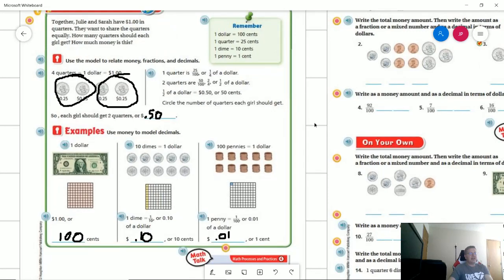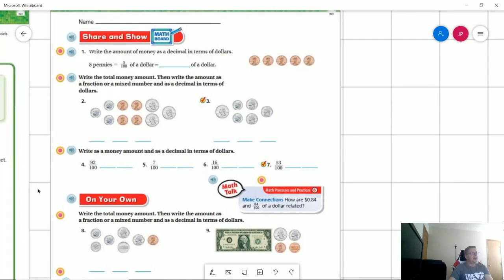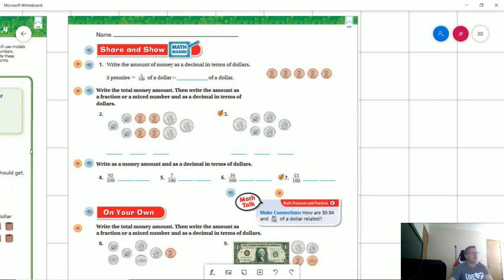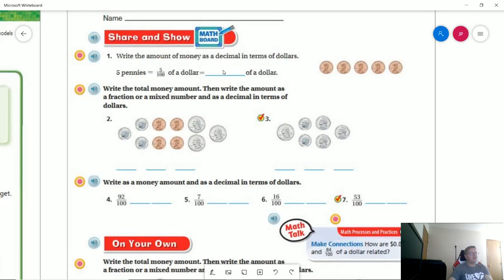Let's go ahead and take a look at our share and show questions. So to start with, if I have five pennies, I have five one hundredths of a dollar, which would be 0.05 of a dollar.